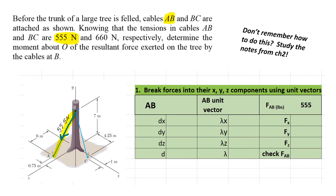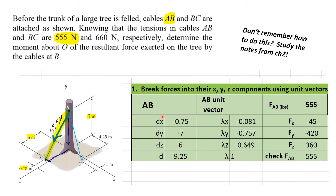Before we can take the cross product, we have to split everything up into its x, y, z components. Let's split cable AB up first. We have a force of 555 newtons. We're going to look at the distances along the cable, use the cable to find our unit vector, and then use the unit vector to split apart our forces.